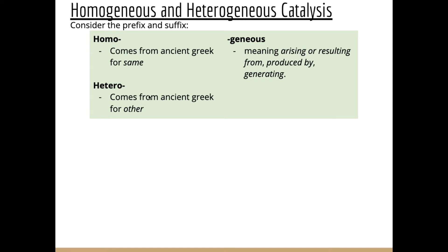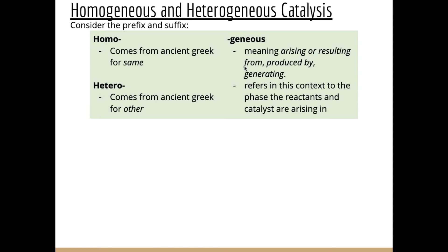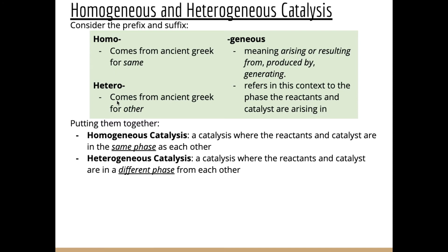What it's referring to here is the phase of the reactants and the phase of the catalyst. A homogeneous catalyst is one where the reactants and the catalyst are in the same phase — homo from ancient Greek for 'same.' A heterogeneous catalyst is one where the reactants and the catalyst are in a different phase — hetero meaning 'other.'